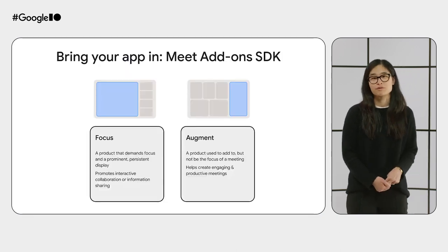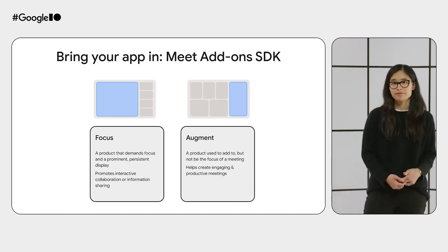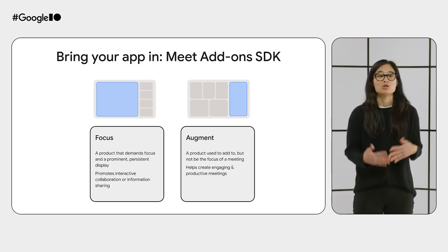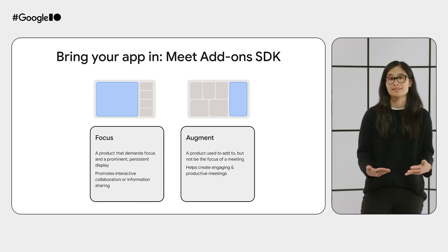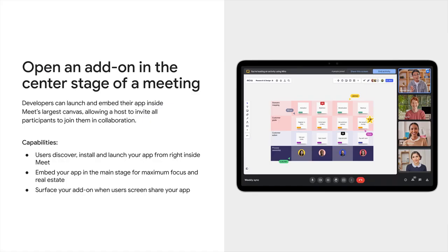We have two frameworks to choose from with this SDK. One called Focus, where your app is the focal point of the meeting. And one called Augment, where your app is on the sidebar and, true to its name, augments or enhances the meeting. In the Focus framework, your app takes on the largest amount of real estate in the meeting — what we call center stage or main stage. This is best used when your app tends to be the focal point of the discussion, like a brainstorming session, a game, or a video you want to co-watch or co-play.